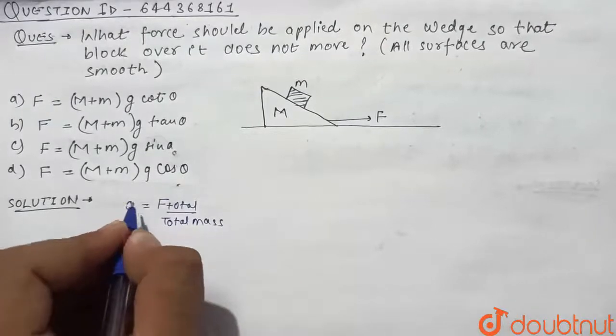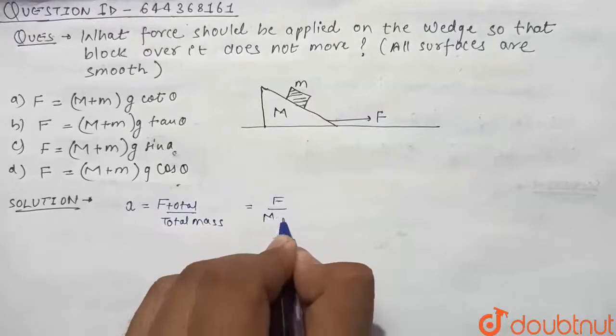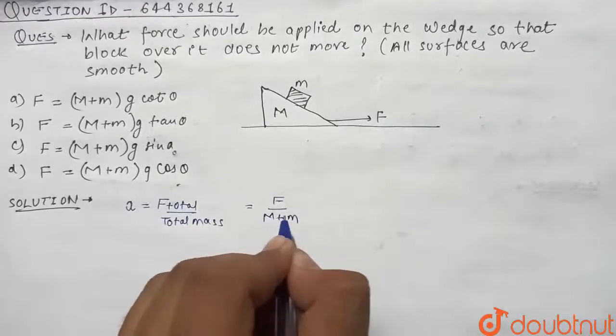Since the block is not moving on the wedge, F total is F, and total mass will be M plus m. So this will be our acceleration.